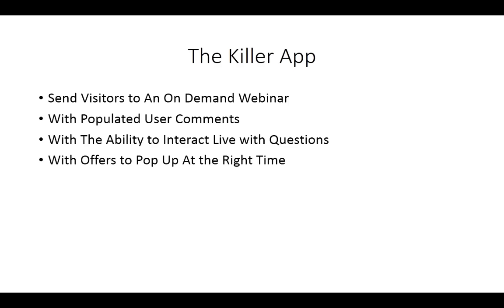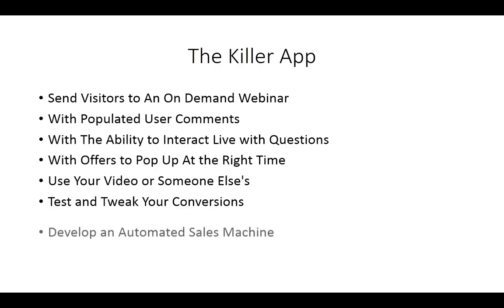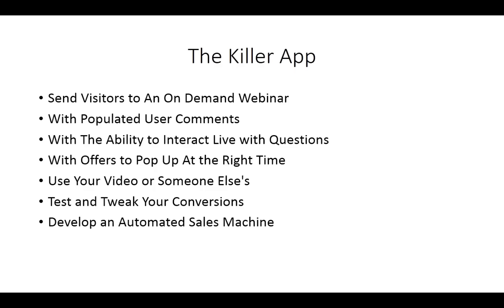You can have your offers pop up automatically at the right time. When you set up that automated webinar, you determine ahead of time when those offers are going to pop up for visitors inside the webinar system. You can use your own video or somebody else's — as long as you have their prior permission. With this approach you can test and tweak your conversion, continue to show the offer at different times, and keep adjusting until it's actually making you sales. What you're developing here is an automated sales machine with Webinar Fusion Pro.